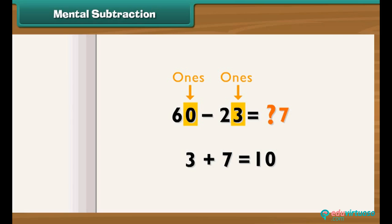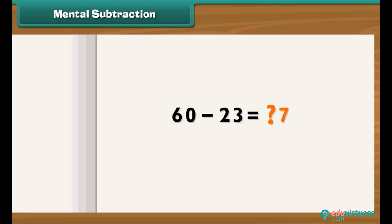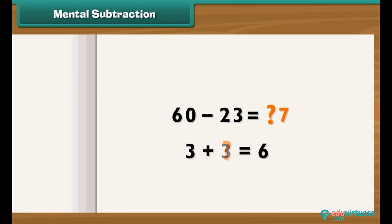The tens place of the sum is 6, and we already have 2 as the tens place of one number, plus 1 as carryover. What should be added to 3 to get a sum of 6? The answer is 3. So the tens place of the second number is 3. Therefore, 60 minus 23 equals 37.